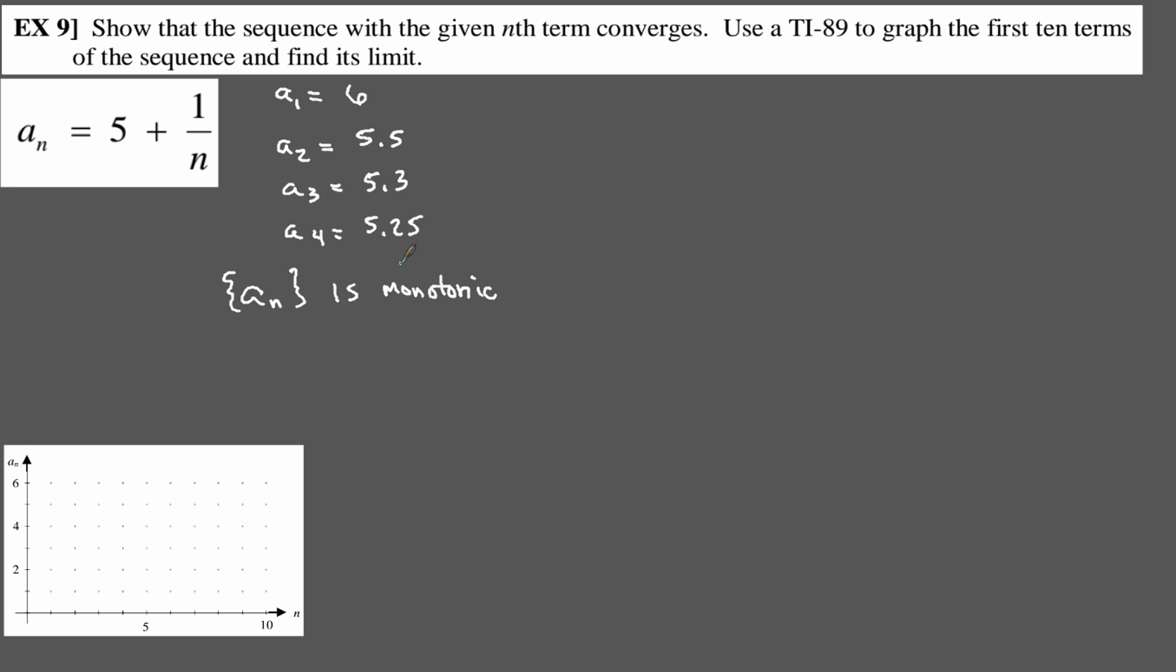Now, the next thing that we need to do is figure out whether or not this sequence is bounded. Now, our first term is 6, so everybody should be okay with that. So if we use the limit process here, so the limit as n goes to infinity of 5 plus 1 over n. Now, we know the 1 over n piece, that is going to go to 0 as n approaches infinity, so our limit is going to be 5 for our sequence.